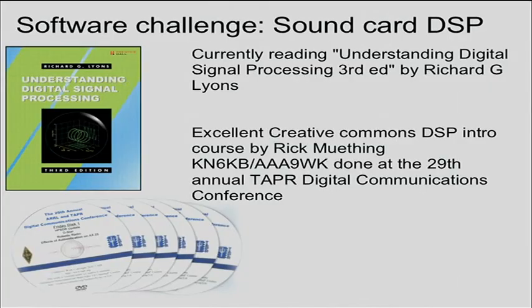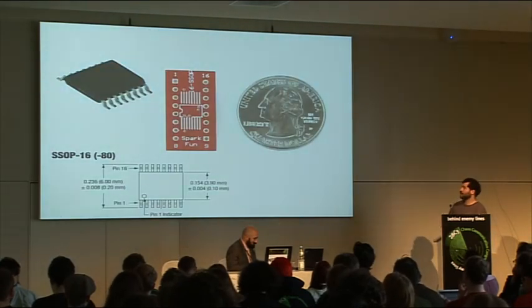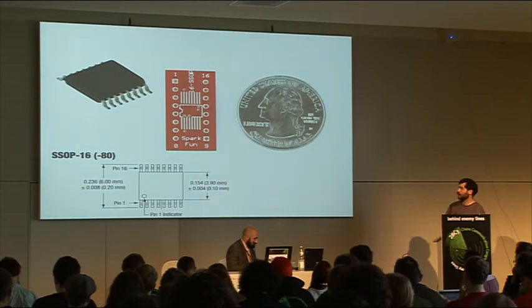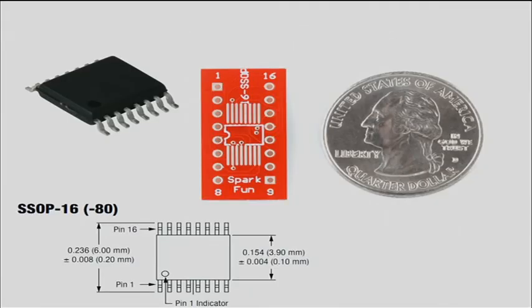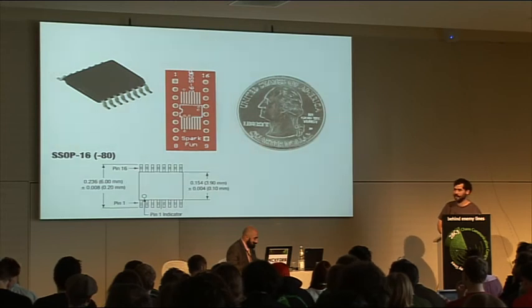There's a pretty good book about implementing practical DSP systems by Richard G. Lyons. There's also a good DSP intro course that's Creative Commons — if you're interested, contact me and I can send it to you. It was done last year at Tapper. This is the antenna switcher I'm currently using. It's pretty small and very cheap — under $5 US for single quantities. I'm just using a SparkFun breakout board to hook it up to the microprocessor and the antennas.